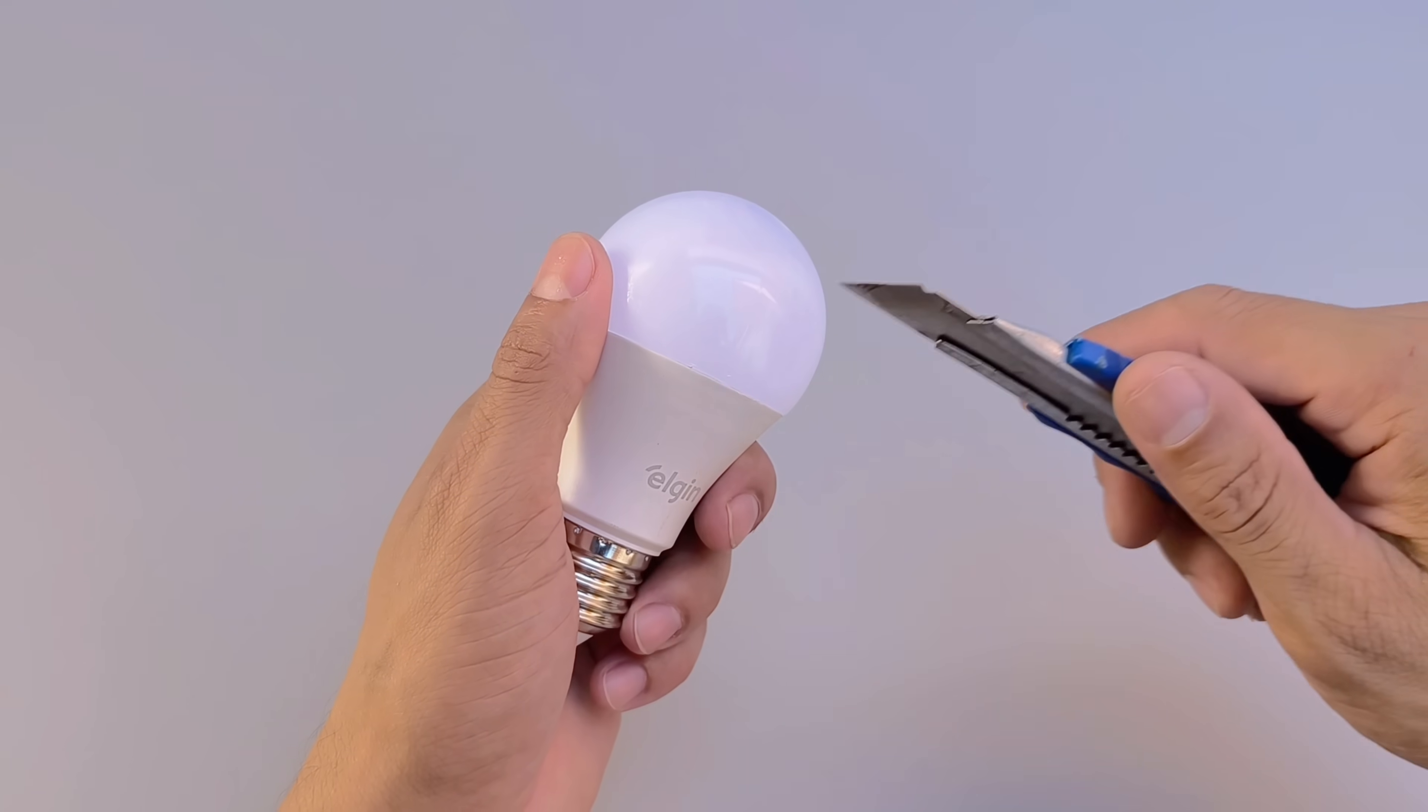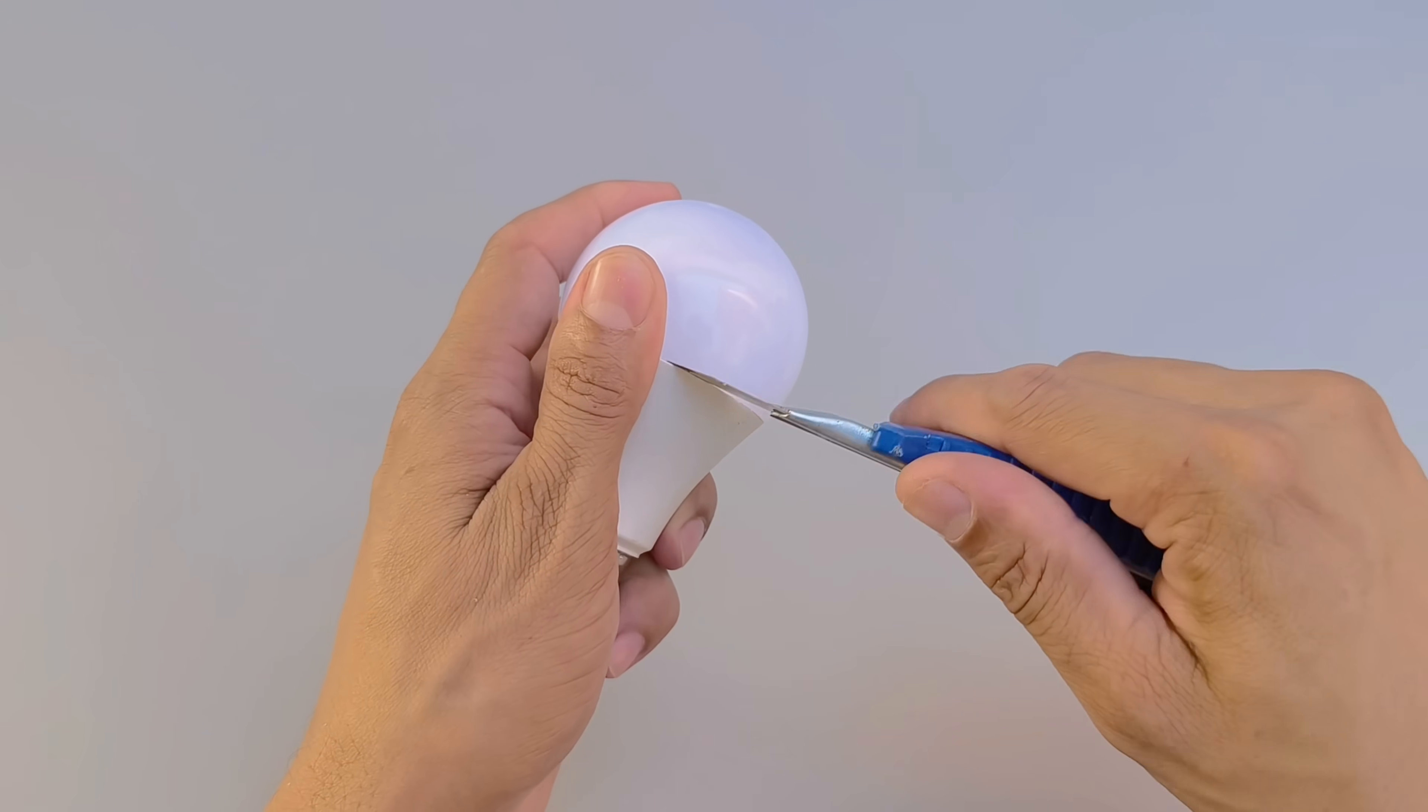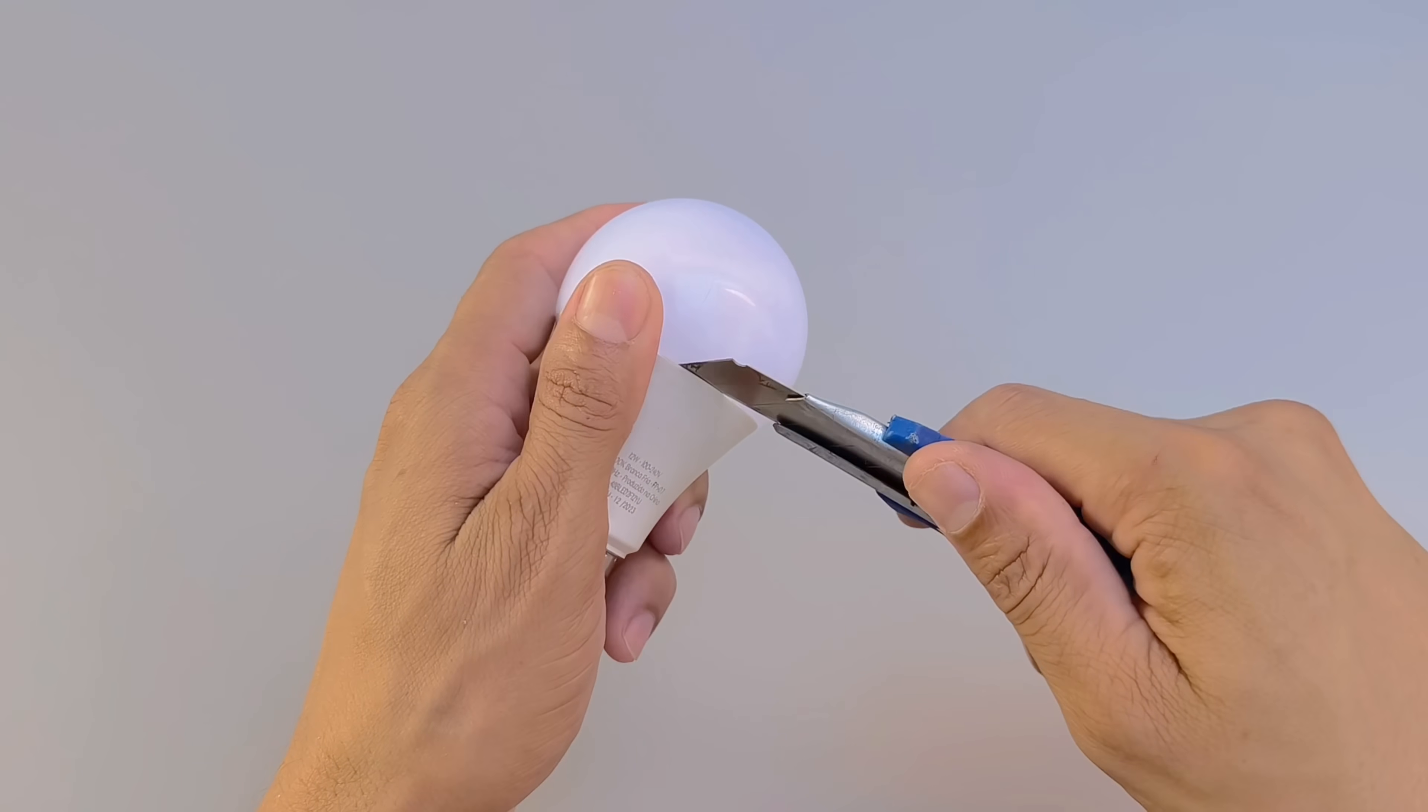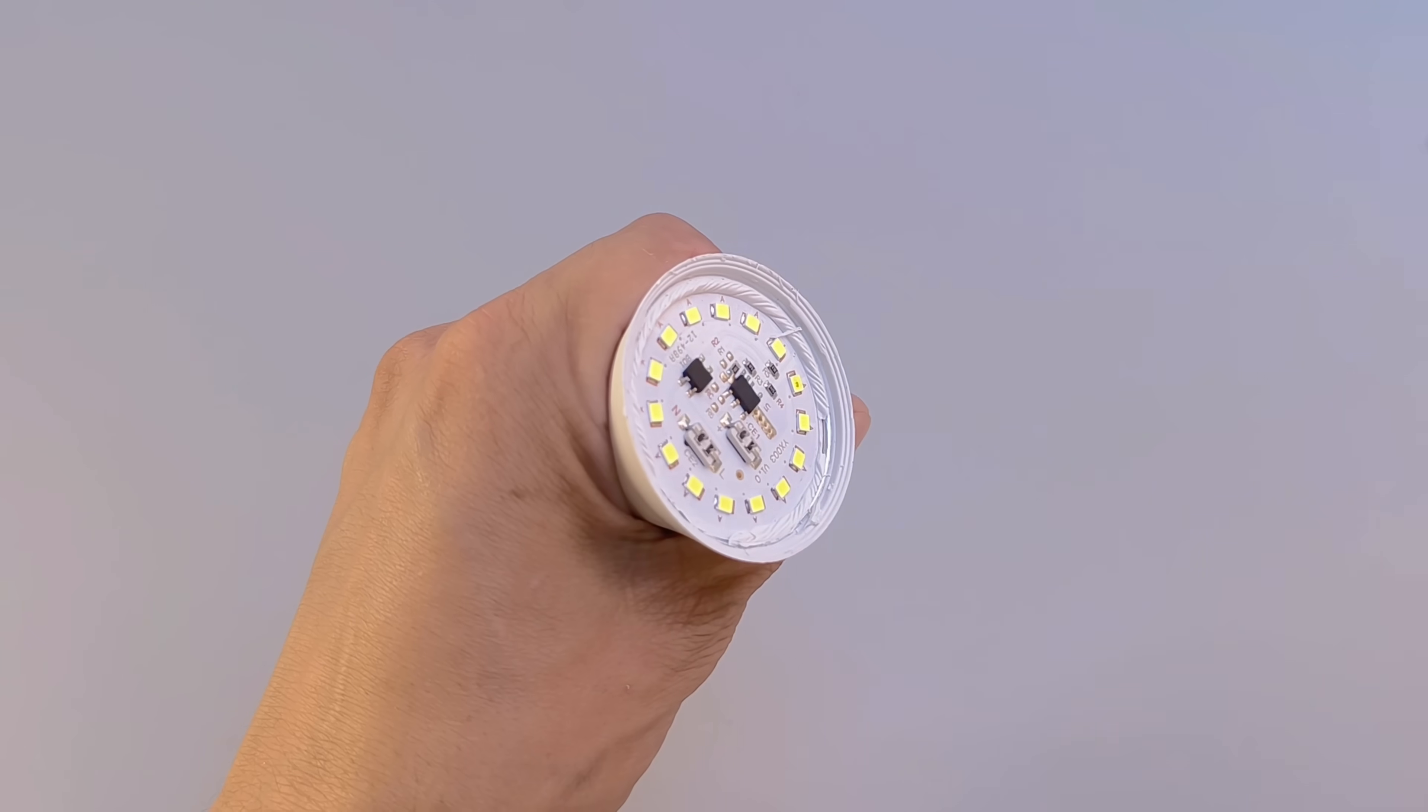With the lamp in hand, the next step is to remove the bulb. To do this, use a very sharp utility knife. Carefully run the blade around the base, slightly cutting the glue that holds the bulb to the socket. Do this process very carefully. The goal is to release the bulb without damaging the rest of the lamp structure.